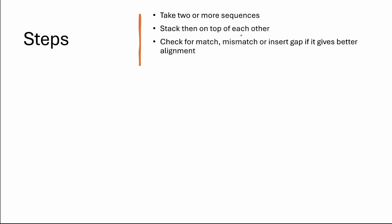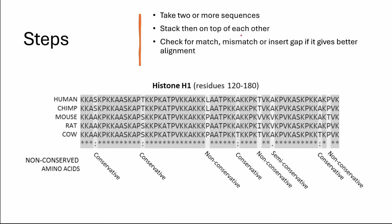For example, if I have the sequences of the histone protein in five organisms, I will stack them on top of each other — first the human sequence, then the chimp sequence, then the mouse, then the rat, and then the cow. The next step is to check for match, mismatch, or to insert a gap for a better alignment. In this line I have all matches, while in this line I have a mismatch with the three sequences at the bottom.